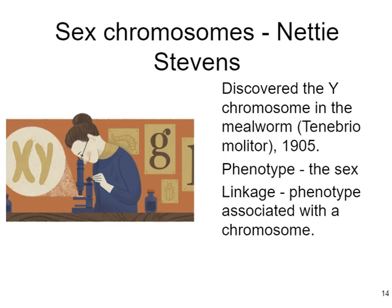It would be remiss not to mention Dr. Nettie Stevens, who was the person who first discovered through observation what we now call the sex chromosomes. She discovered the Y chromosome in the mealworm Tenebrio molitor and published that work in 1905. She really set the stage for figuring out the idea of linkage, the idea of sex-linked inheritance, and contributed a lot of valuable information to the chromosome theory of inheritance.